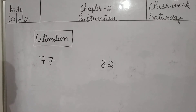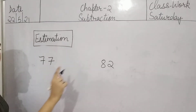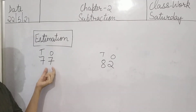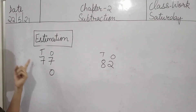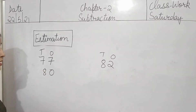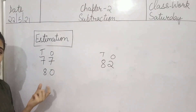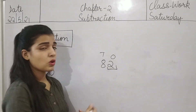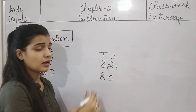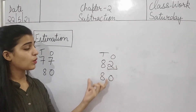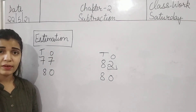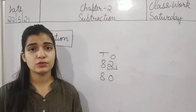Now two more examples and then we will wrap up this topic. 77 and 82. For 77 — ones is 7, bigger than 5. So ones becomes 0 and we add 1 to tens: 7 becomes 8. So 77 is rounding off to 80. Now 82 — 2 is smaller than 5, so no need to add anything to 8. Tens stays as 8 and ones becomes 0. So 82 is rounding off to 80. Today we discussed estimation and rounding off. I think you all have understood this topic. That's it for today — see you in the next class.